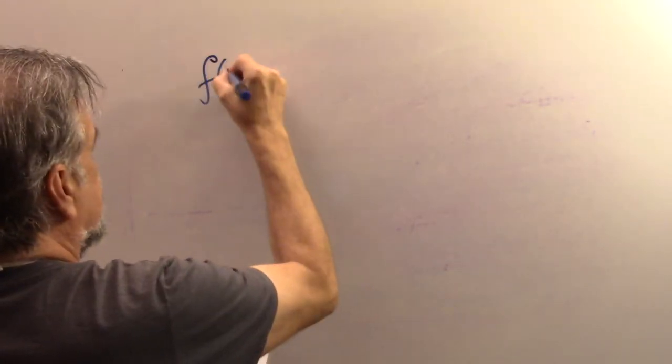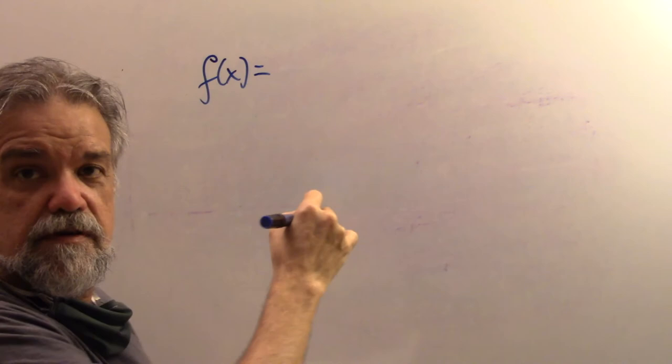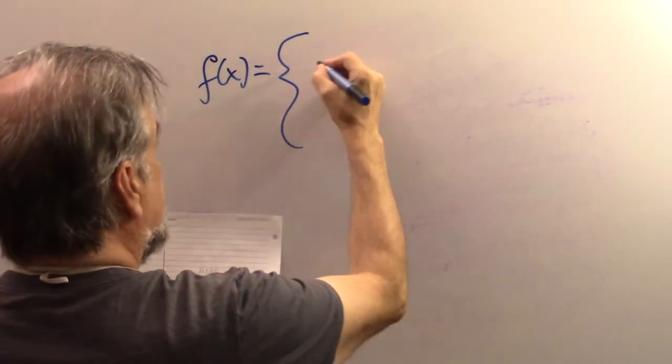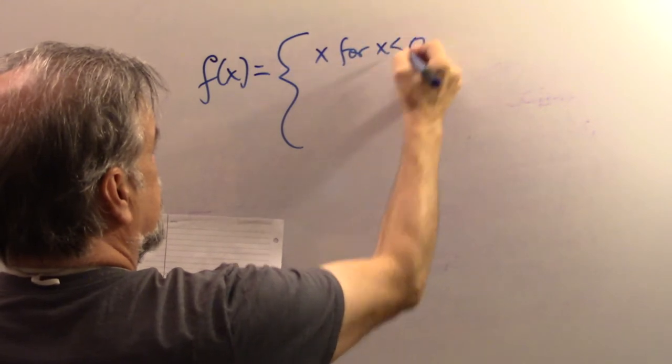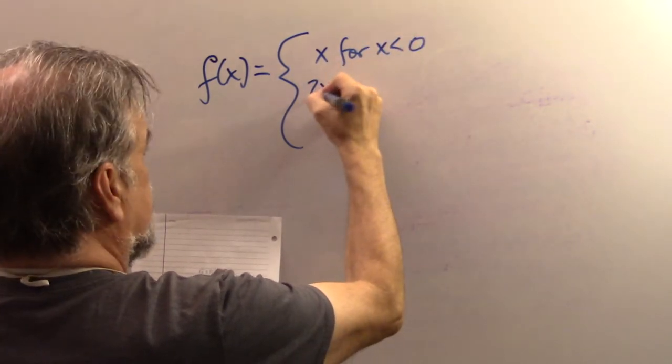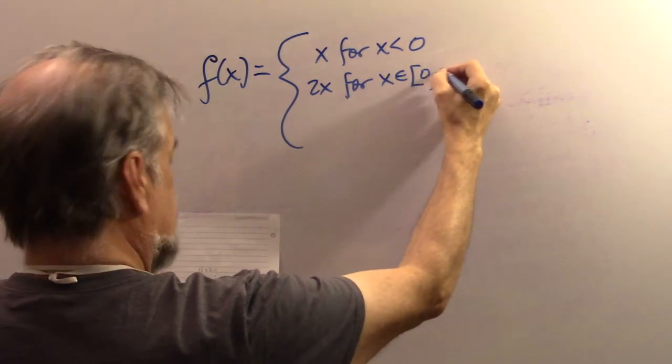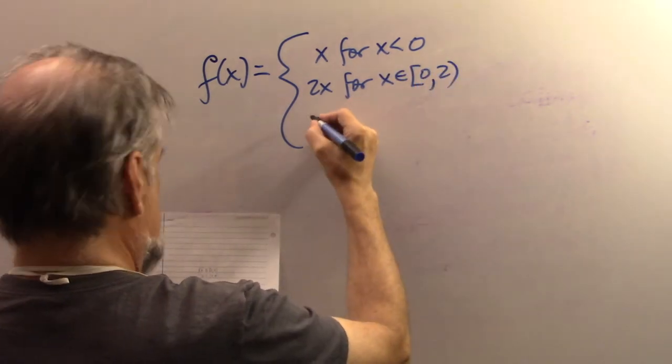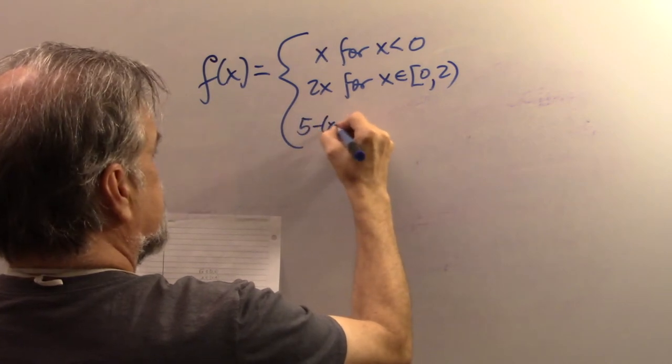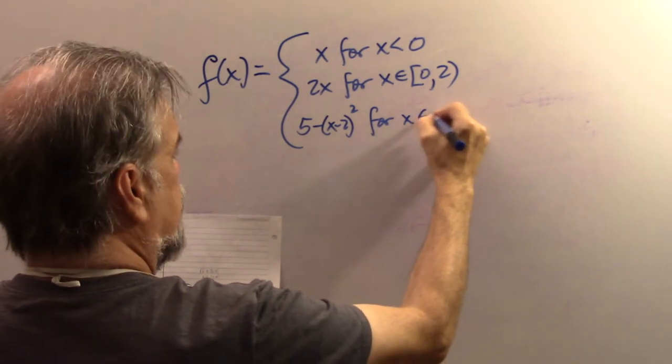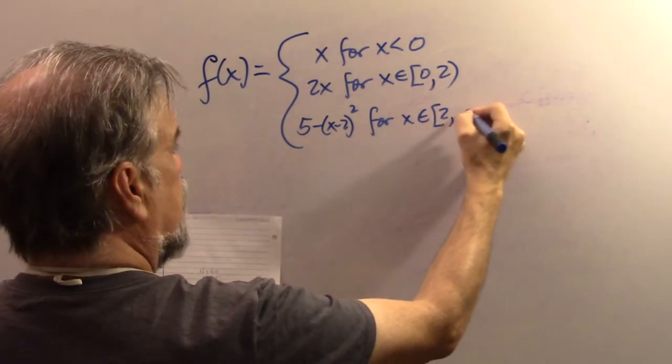And let's have this other example be a little weirder. Let's say this is going to be F of X is X for X less than zero. It is two X for X between zero and two. And then it is five minus X minus two squared for X between two and infinity.